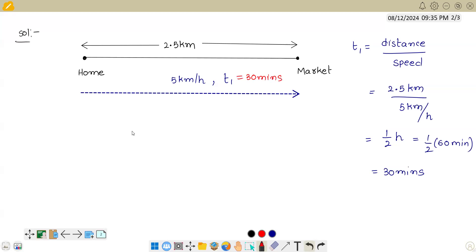Now in the reverse journey, he is traveling with a speed of 7.5 km per hour. So let us assume this is the path that represents the reverse. So he is traveling this time with 7.5 km per hour.